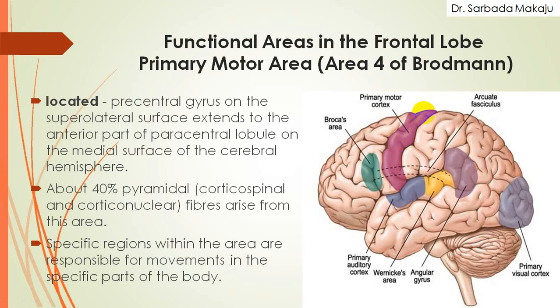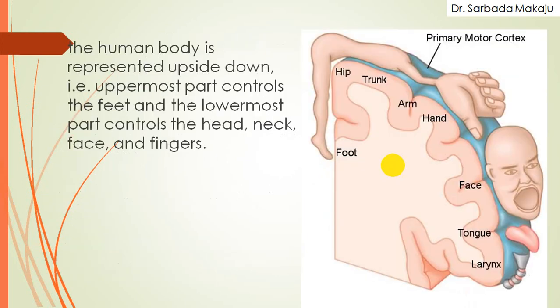The primary motor area consists of 40% of the pyramidal fibers. It represents the motor functions of the human body in an upside-down fashion. The uppermost part on the medial surface is controlled by the foot, then the lower limb, then coming to the superior lateral surface: hip, trunk, arm, hand, then the face, tongue, and laryngeal area — it moves upside down.